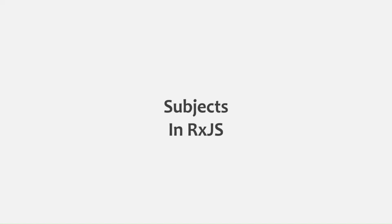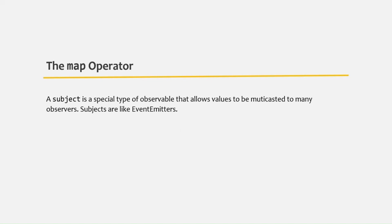In this lecture, let's learn what are subjects in RxJS and where and when do we use them. A subject is a special type of observable that allows values to be multicasted to many observers. Using a subject, we can emit some data and that data can be subscribed by many observers. The main purpose of using a subject is to make cross-component communication easy.